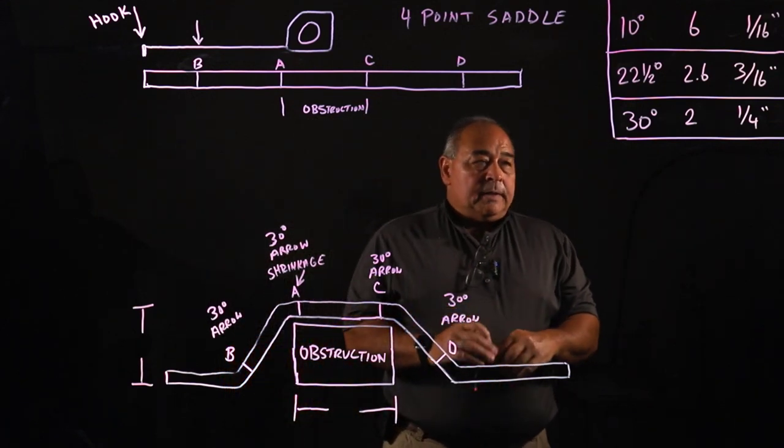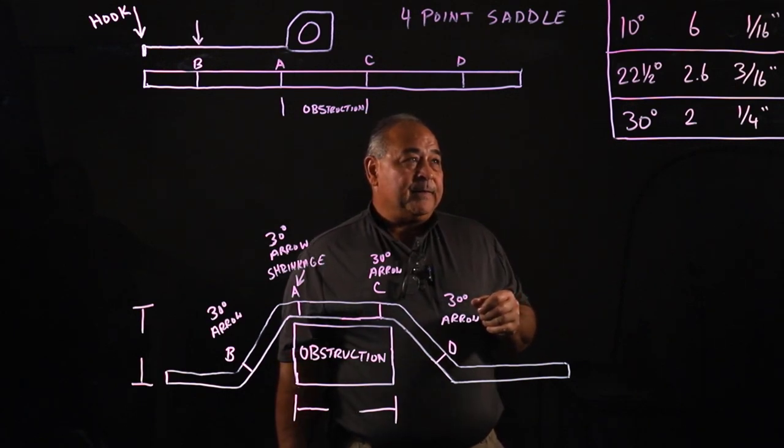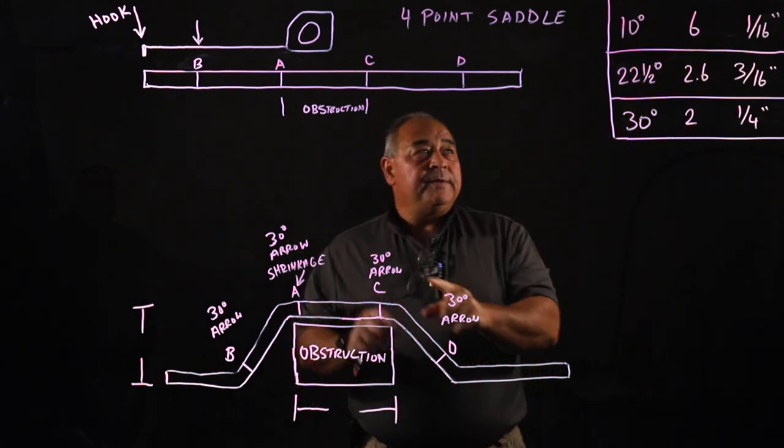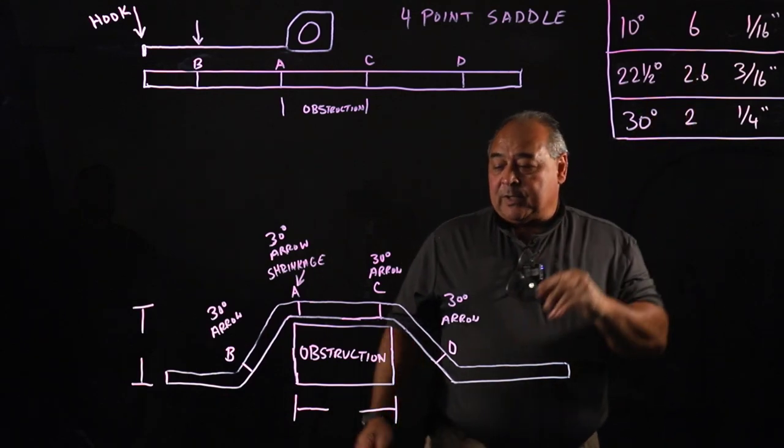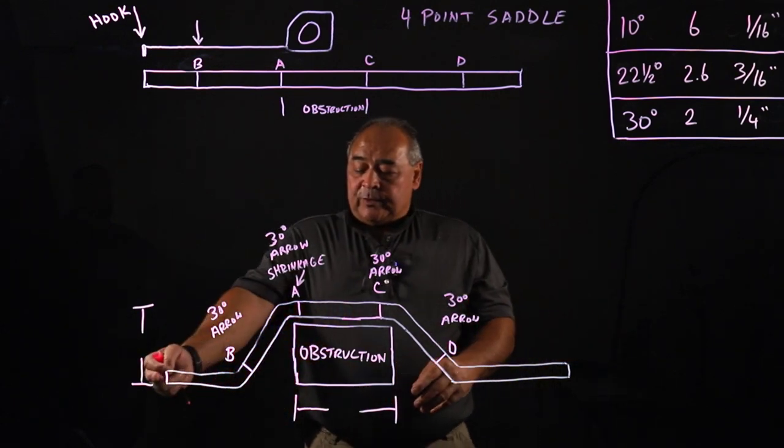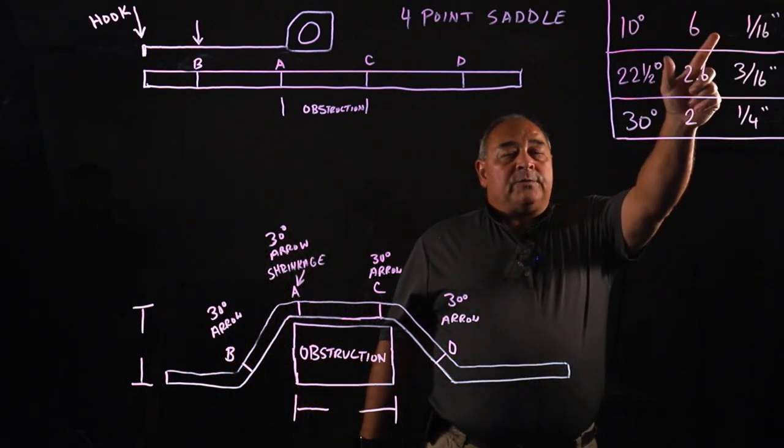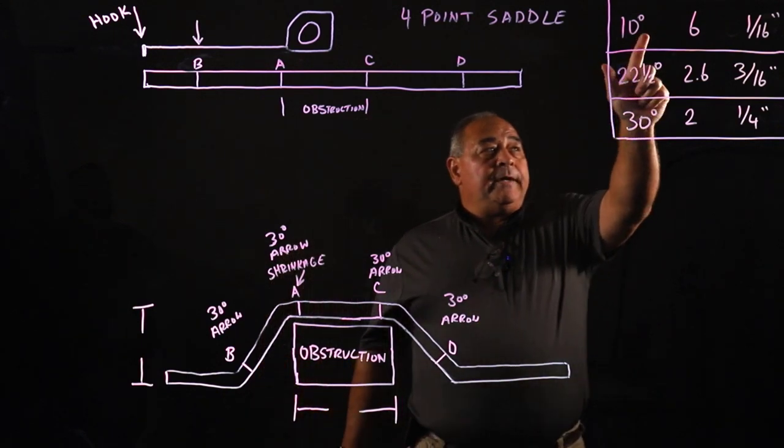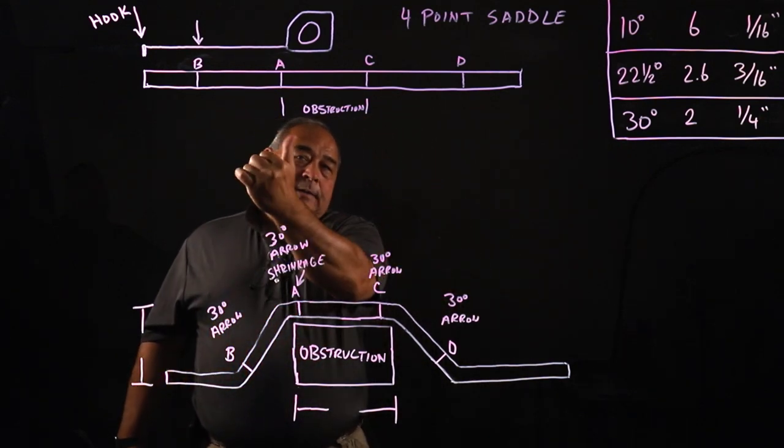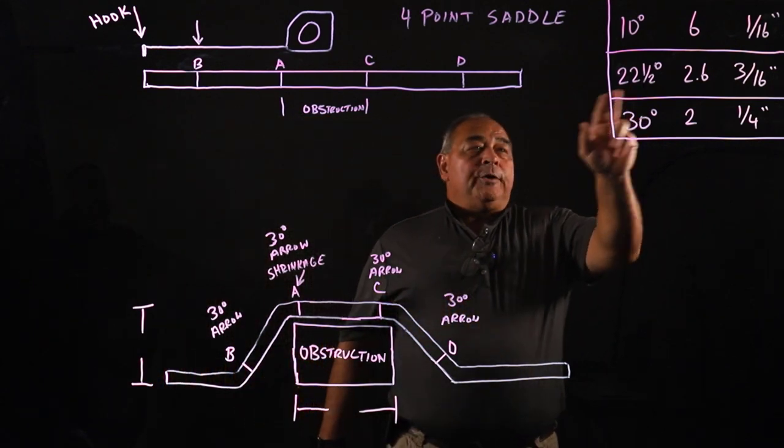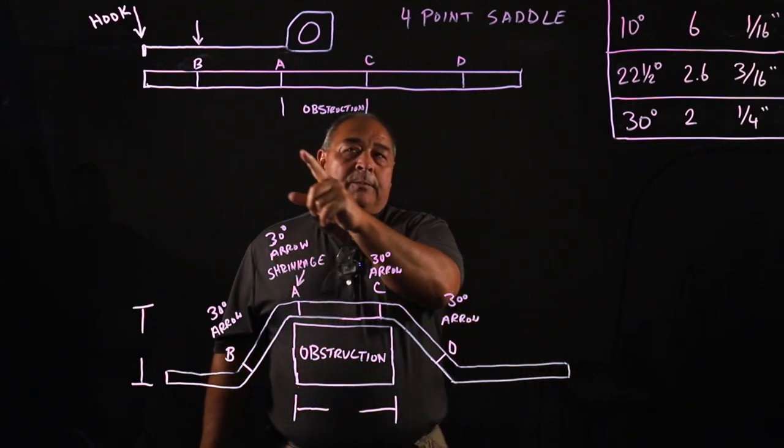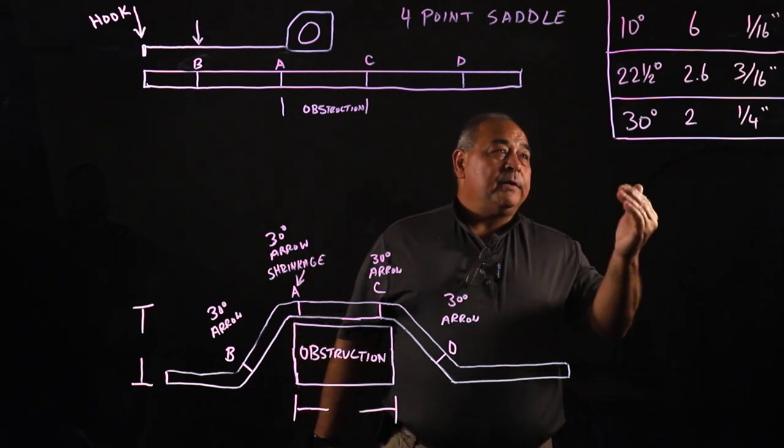Over here we've got some common offset pieces of information but we also have pipe shrinkage associated. For a ten degree offset our multiplier is six, but we have a pipe shrinkage because as we do this we're shrinking this end of the pipe this way. For every inch of raise, for ten degree we've got to add one-sixteenth of an inch to our mark A. That's taking this mark A and moving it this direction. For twenty-two and a half, for every inch of raise it's going to shrink three-sixteenths of an inch. So we've got an average of raise, move that mark A three-sixteenths of an inch deeper into the measurement.